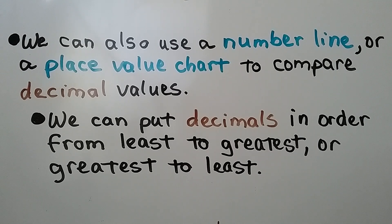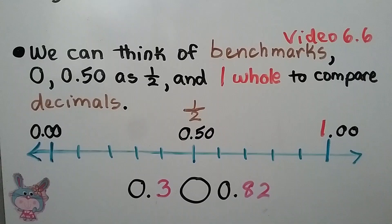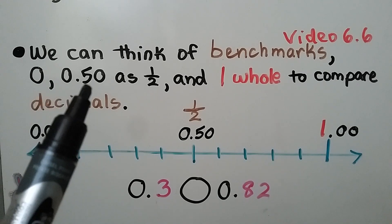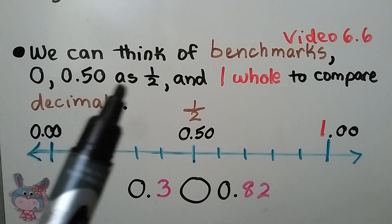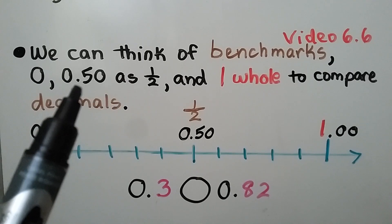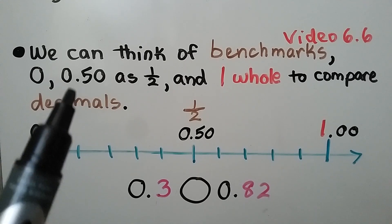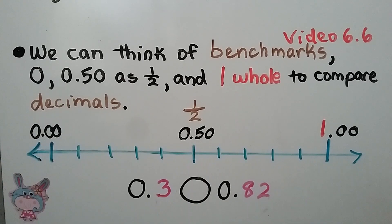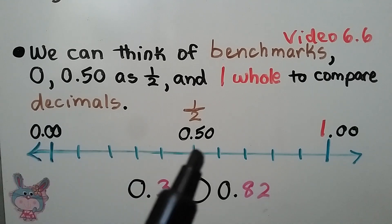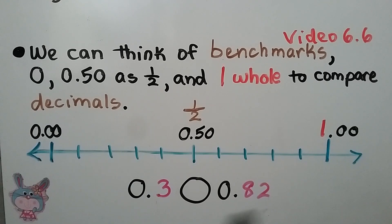We can put decimals in order from least to greatest or greatest to least. We can think of benchmarks: zero, fifty hundredths as a half — we can also use five tenths as a half — and one whole to compare decimals.